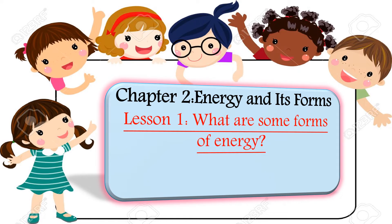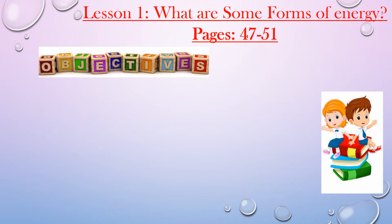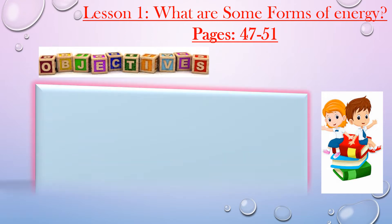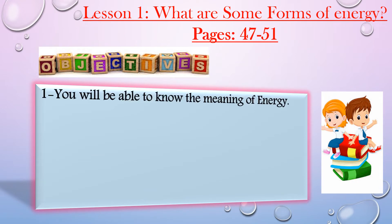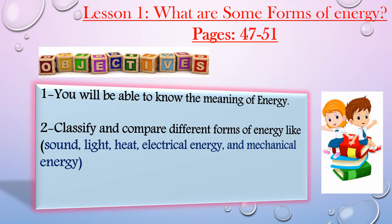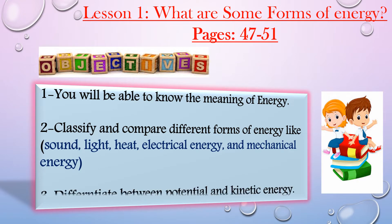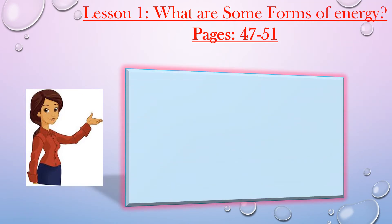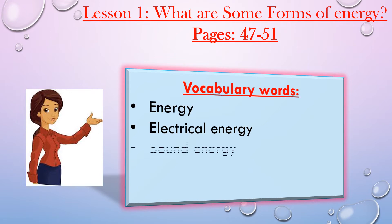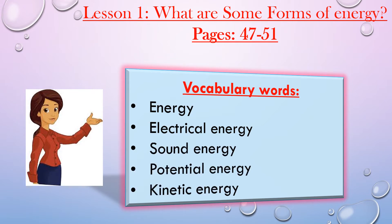My students, we will start with a new chapter — chapter number two: Energy and Its Forms. We will talk about lesson number one: what are some forms of energy, pages 47 to 51. Our learning objectives for this week: number one, know the meaning of energy; number two, classify and compare different forms of energy like sound, light, heat, electrical, and mechanical energy; number three, differentiate between potential and kinetic energy.